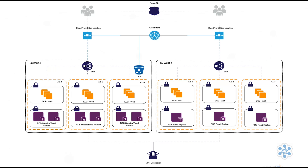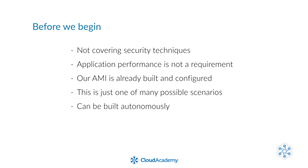A few notes before we start building our solution. We are not going to go over security best practices in this group of lectures; however, we have not skipped security in building our environment — we're just not showing all of the steps that would be necessary for a deployment of this nature. Security of your account and your applications running within it are very important and should not be taken lightly. We are selecting the low-cost, low-configuration options today. In a true production environment, we would not select a T1 micro instance for our RDS instance. Our focus is on high availability, and we have pre-built and configured our AMI to save a bit of time. This is just one of the many possible high availability scenarios.